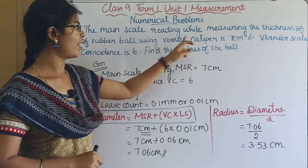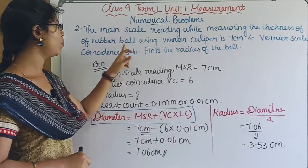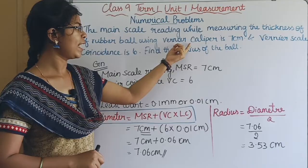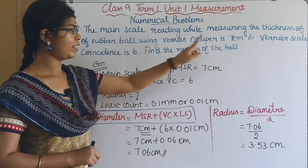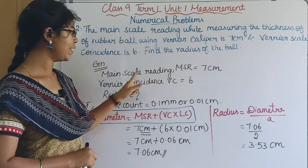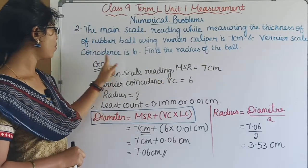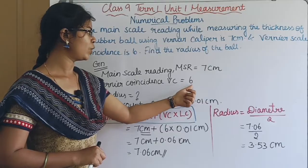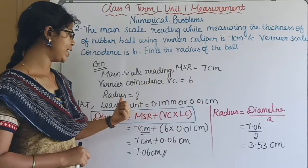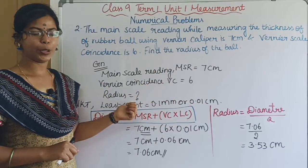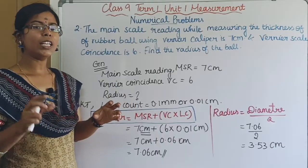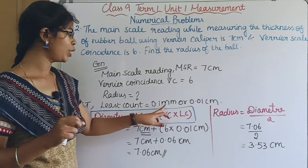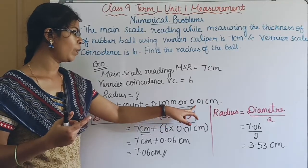Next is the second problem. The main scale reading while measuring the thickness of a rubber ball using a vernier caliper is 7 cm. The vernier scale coincidence (VC) is 6. We have to find the radius of the ball. The least count of the vernier caliper is 0.1 mm or 0.01 cm.